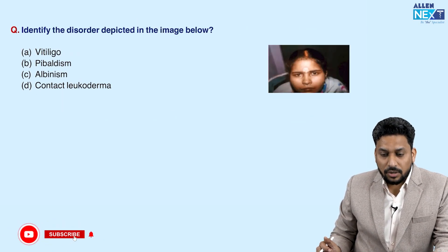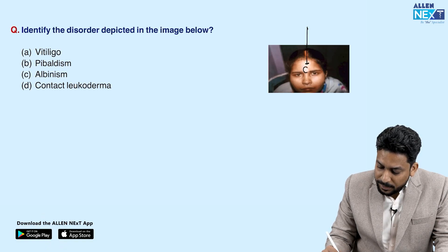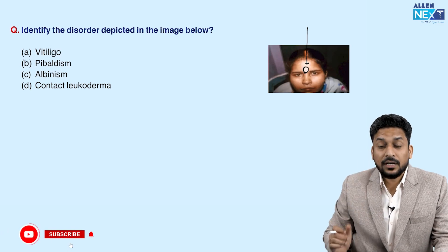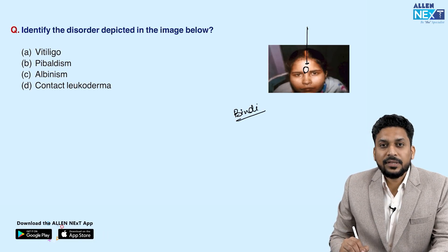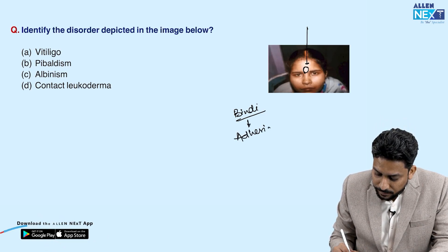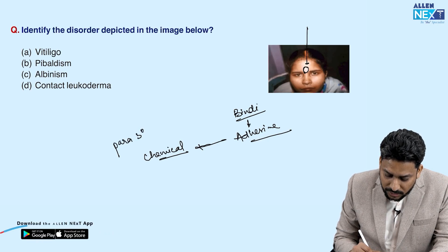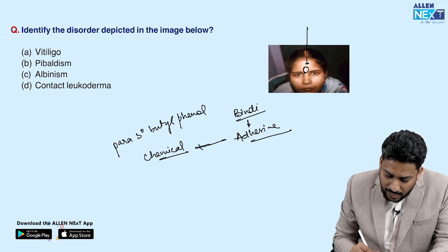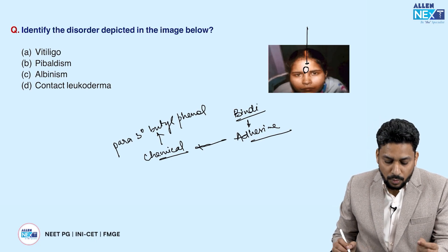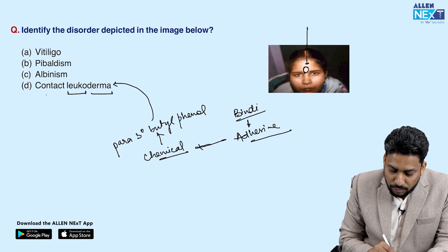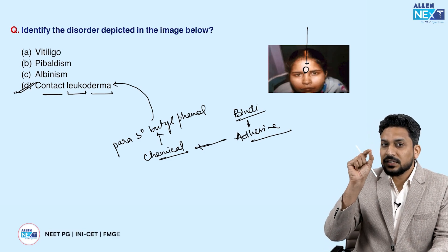In the next question, they ask to identify the disorder depicted in the image. In the image, there is a female with a depigmented area over the center of the forehead. Females apply a bindi over the center of the forehead, and behind the bindi to stick it, there is an adhesive. This adhesive can contain a chemical — para tertiary butyl phenol. When this chemical comes in contact with the skin, it can lead to whitening of the skin, that is leukoderma. Leuco means white, derma means skin. So this is known as contact leukoderma — the white skin is present specifically over this area.